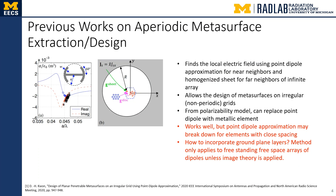Some previous work related to realizing these aperiodic metasurfaces, which are difficult to realize with traditional locally periodic extraction approaches, is one from Du Hoon Kwan's group. Professor Du Hoon Kwan was able to use the point dipole approximation and try to find a local electric field which excites a given dipole by using the known near fields radiated by dipoles, and also by homogenizing the sheet outside of a certain radius R. This approach works very well for point dipole approximations. From the polarizability model, one can replace each point dipole with a metallic element if the local electric field is known. The problem is, using the point dipole approximation may break down for elements which have close spacing, and how do you incorporate ground plane layers?